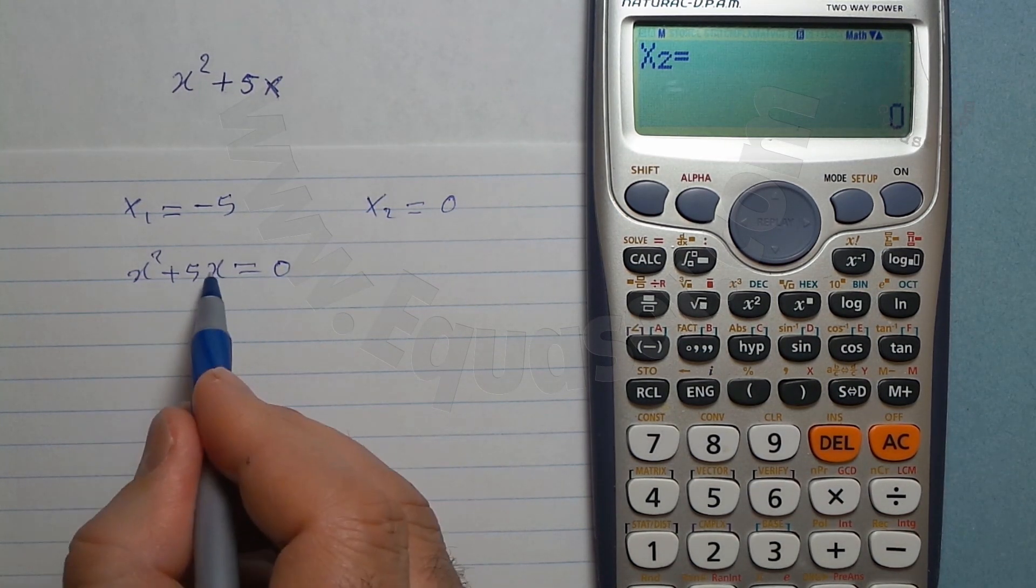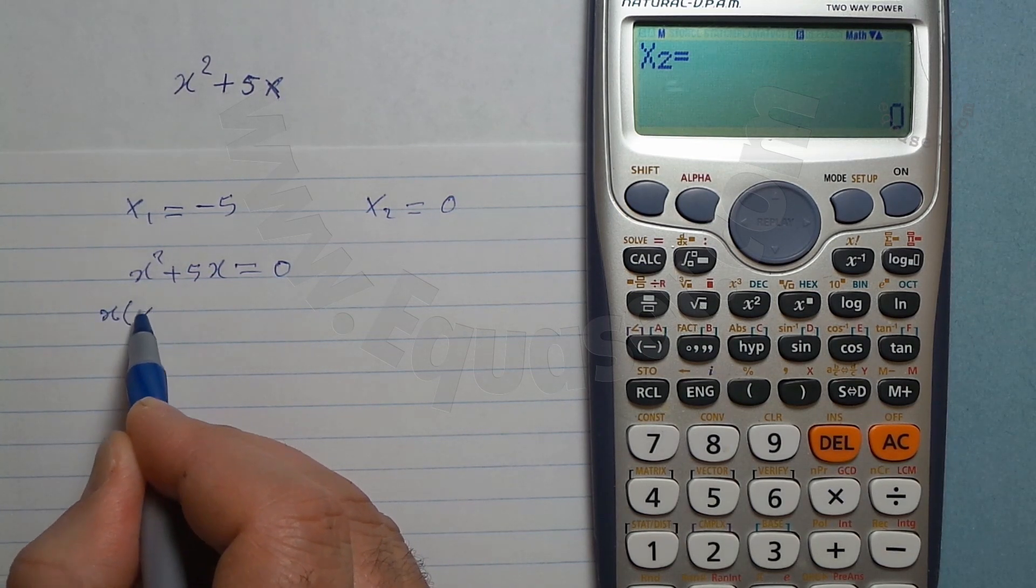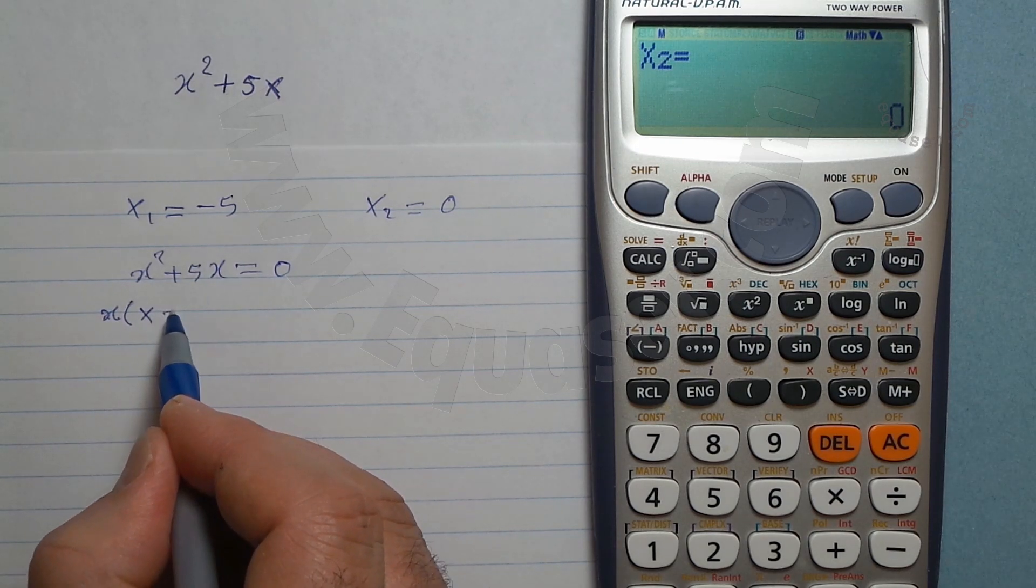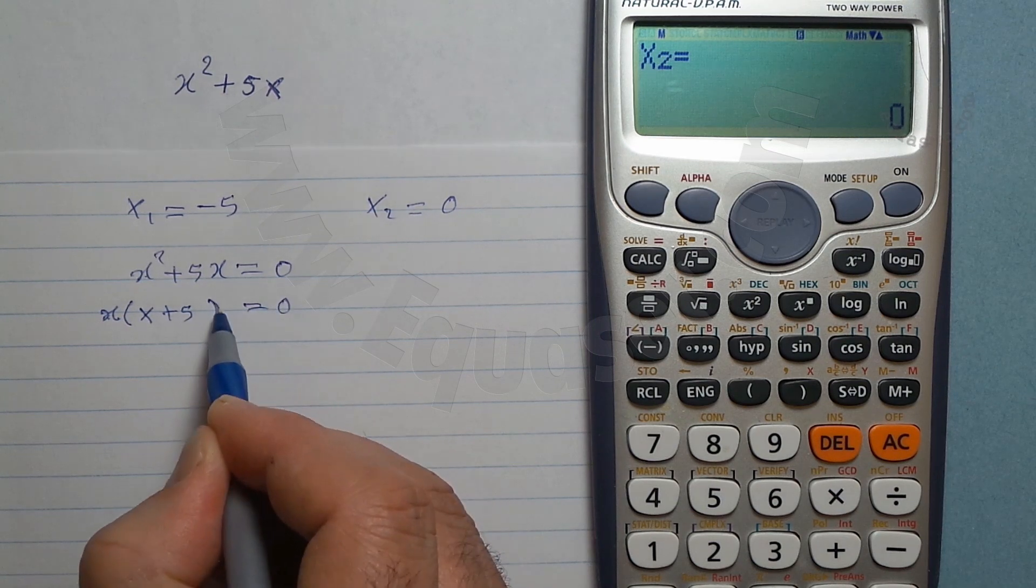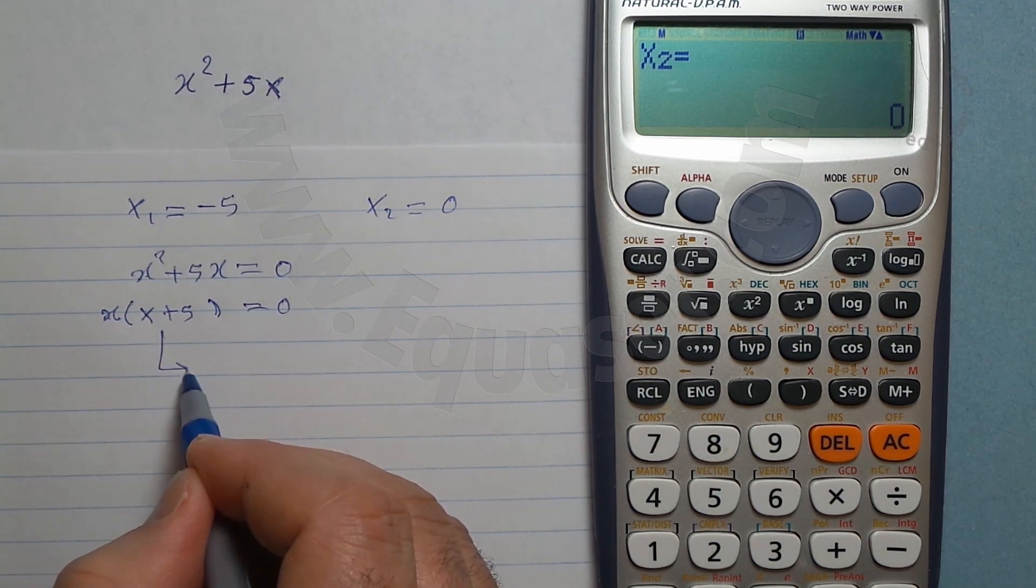Actually, because we have this condition, so x squared plus 5x equals 0. To factor this or to find out, what we do is because x is common in both, so we factor x out and then we write x times x is x squared, and then we write plus 5 equals 0 in these two cases.